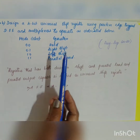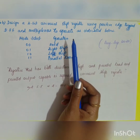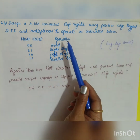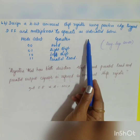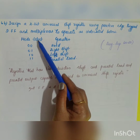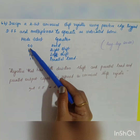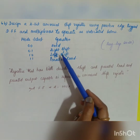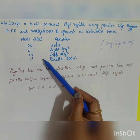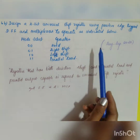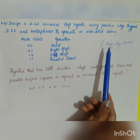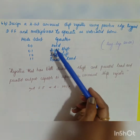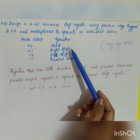The next question is: design a 4-bit universal shift register using positive edge-triggered D flip-flops and multiplexers. The mode select operations are given: 00 is hold, 01 is right shift, 10 is left shift, and 11 is parallel load. This question is from August/September 2020.